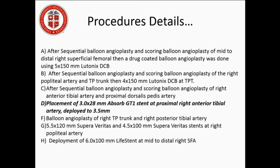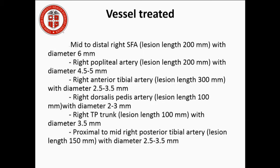Procedure detail is showing the sizes of the balloons and the stents. Mainly, we placed a bioresorbable stent — a 3 by 28 millimeter Absorb GT1 stent in the proximal right anterior tibial artery, deployed at 3.5. As you can see, most of the vessels were treated from the SFA all the way down to the dorsalis pedis.